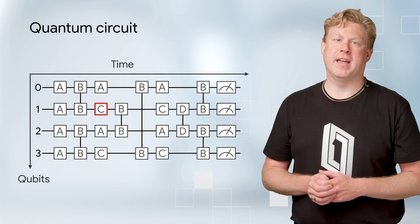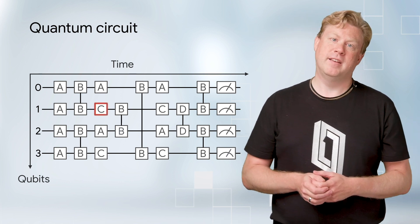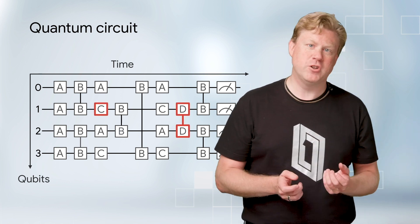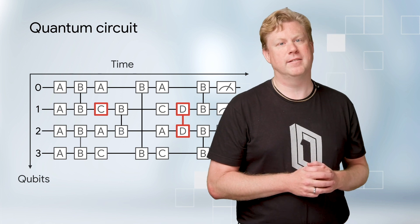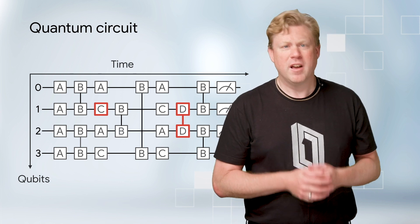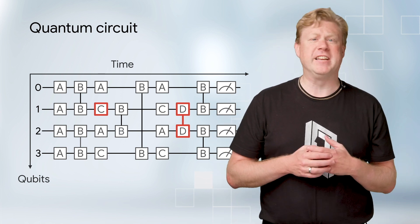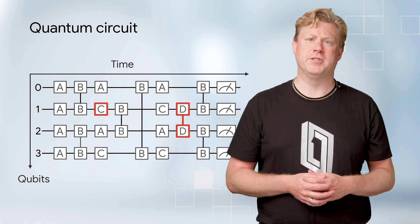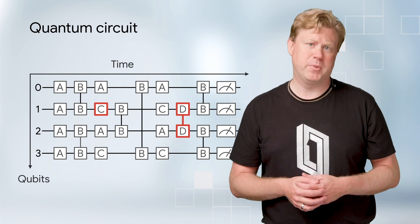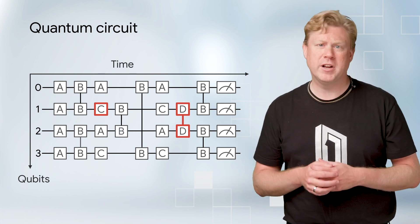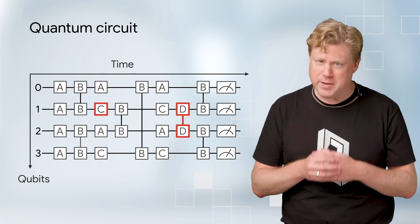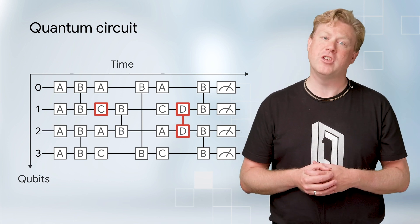Here is a single qubit gate. And here is a two qubit gate. Quantum gates are instructions to send control signals to the quantum computer to perform a certain quantum action on the qubits.